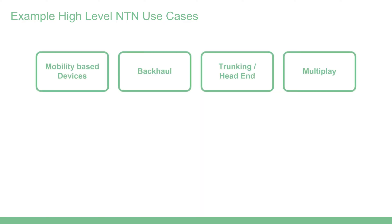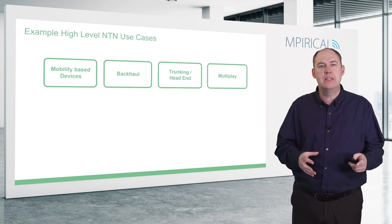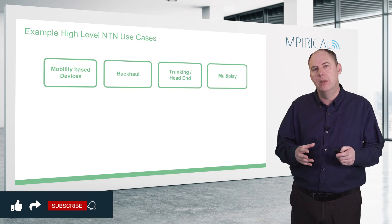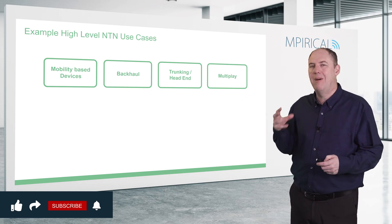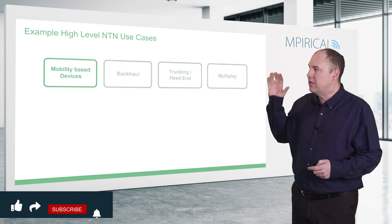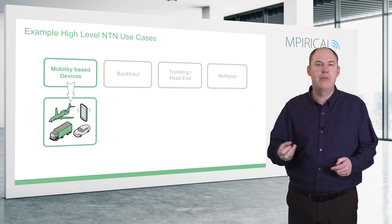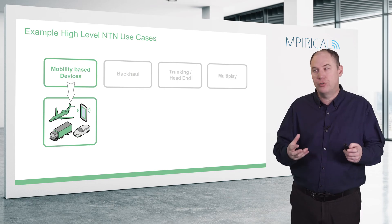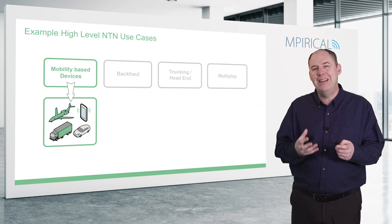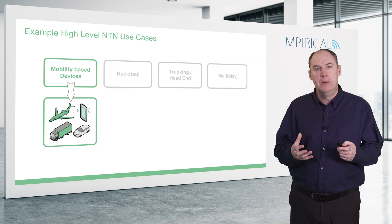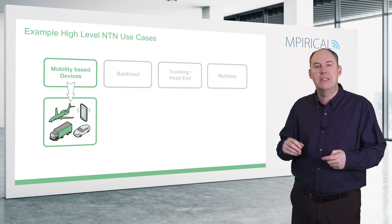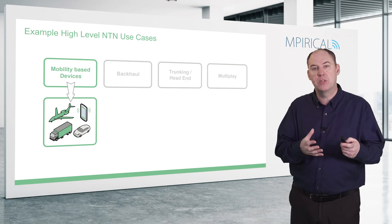Those key improvements facilitate some new use cases. We're going to look at use cases in more detail later in the course, but at a high level we've got some groupings here. To start with, we have mobility-based devices — whether it's a vehicle, handheld device, a truck, or an airplane. The idea is we could use 5G NTN networks to provide extra connectivity to these devices where terrestrial networks can't.